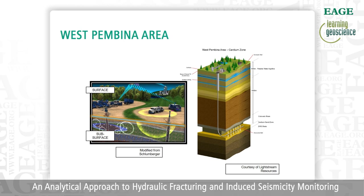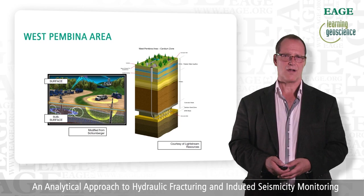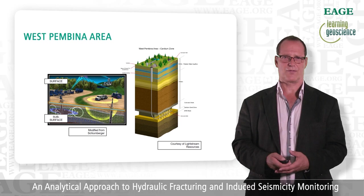In this example from the West Pembina area in Alberta, Canada, I'm showing you an earlier slide put out by Schlumberger that shows what we would show to our industry friends — what fracking is about. You can see a line that runs between the surface and the subsurface, and that the fracking events or micro seismic events are occurring in the subsurface. What is not clear is that this is not just 10 or 100 meters below the surface, so it's a little deceiving and doesn't help our cause.